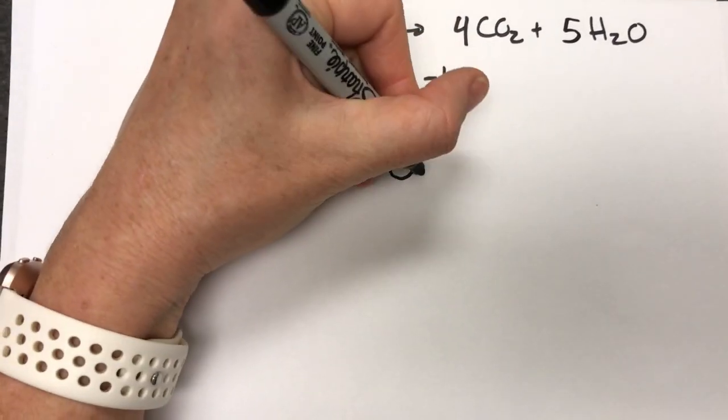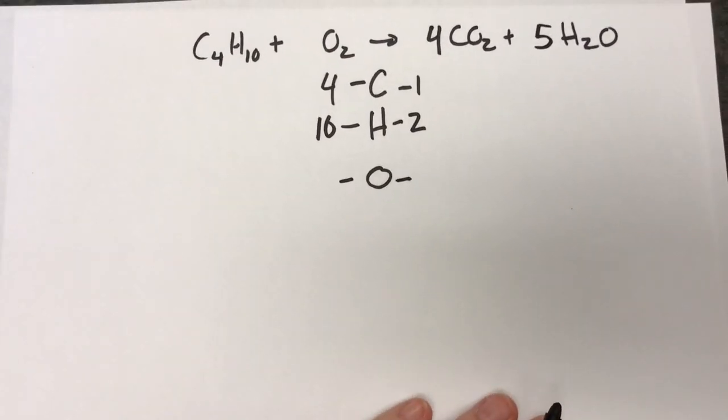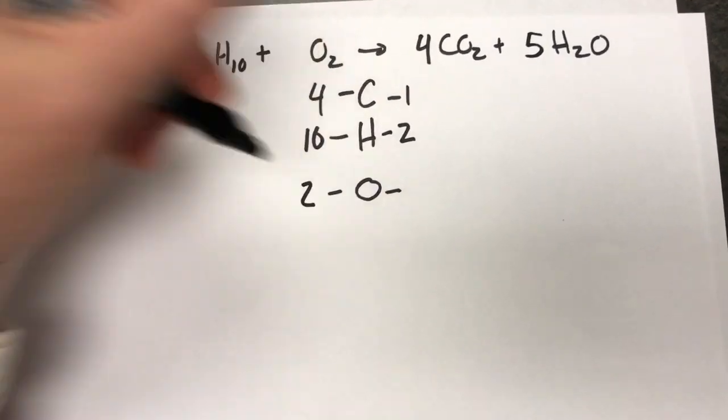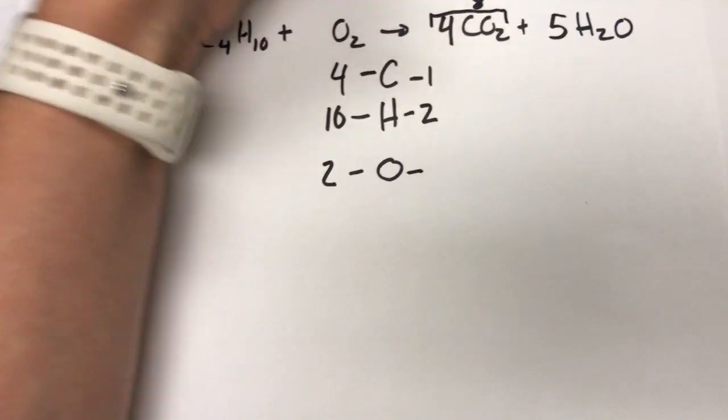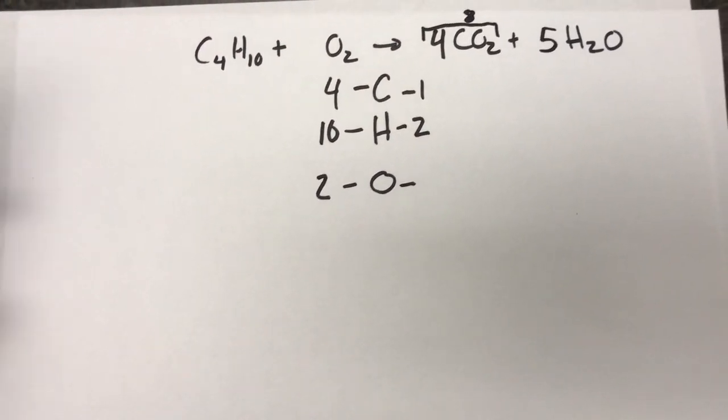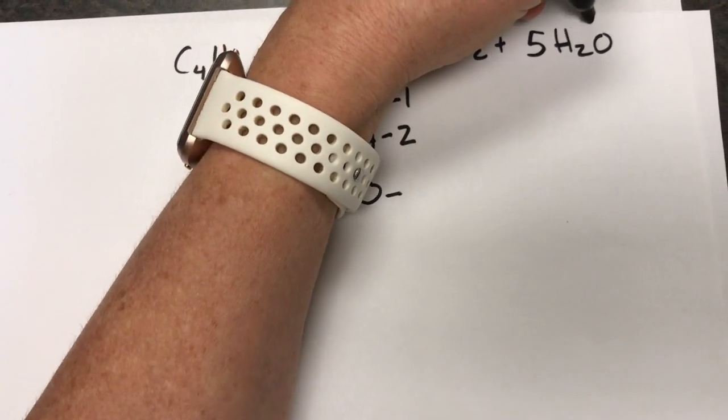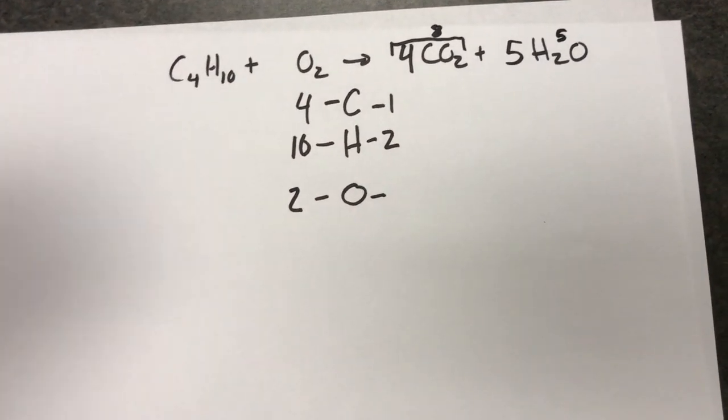And now we'll move on to oxygen. On our left hand side we have 2. On our right hand side we have 4 times 2 or 8 from this one. And 5 from the 5 waters. For a total of 13.